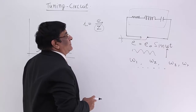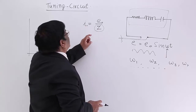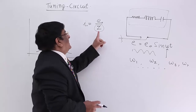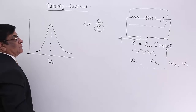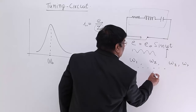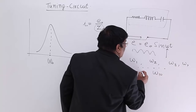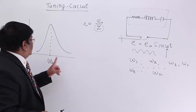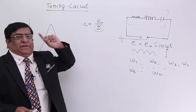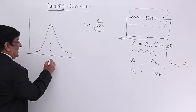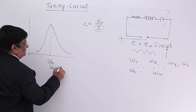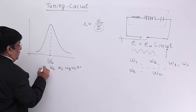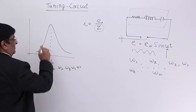Out of ω₁, ω₂, ω₃... suppose for ω₆, ω₆ is such a value which is equal to ω₀, the natural frequency of this circuit. Then what will happen? For ω₆ the current will be maximum. ω₅ is slightly less, so current will be only this much. For ω₇ it is higher, so current will be this much. Every EMF is making a current equal to E divided by Z.